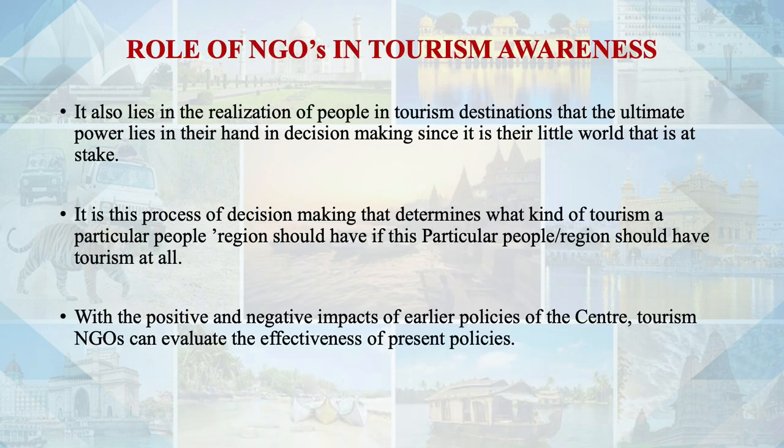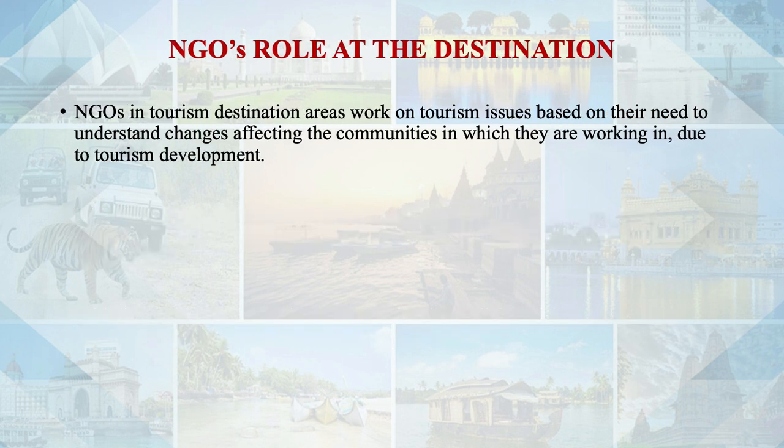The seed of an alternative lies in the people's ability to differ on policies, supported by inputs from tourism NGOs. It also lies in the realization by people in tourism destinations that the ultimate power lies in their hands in decision-making, since it is their world that is at stake. This process of decision-making determines what kind of tourism a particular region should have — or whether it should have tourism at all. NGOs in tourism destination areas work on tourism issues based on their need to understand changes affecting the communities in which they work due to tourism.